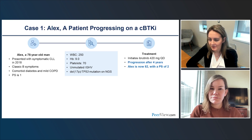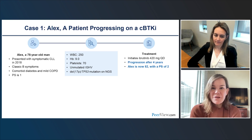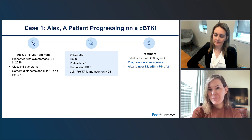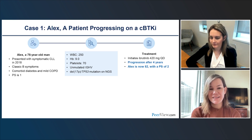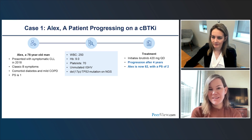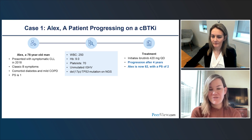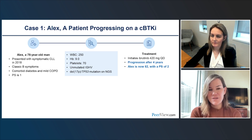Dr. Coombs' thoughts on Alex's case: ibrutinib was an appropriate first-line choice for this patient with DEL17P. Going back four years, acalabrutinib may not have had the CLL label yet. Based on 10-year follow-up data from ASH, the median PFS is quite a bit longer than four years, so his early progression is somewhat worrisome for future therapy outcomes. Now at age 82, the key question is which therapy will be best tolerated and most effective.